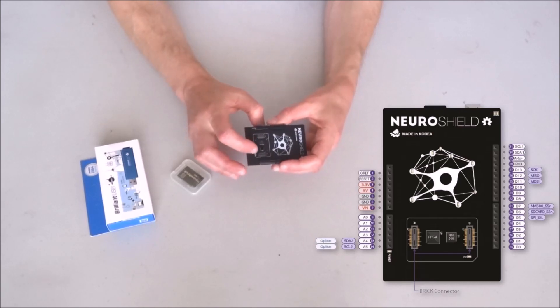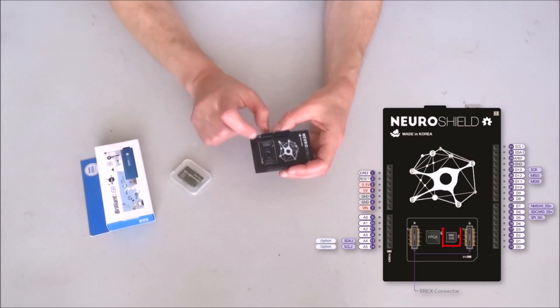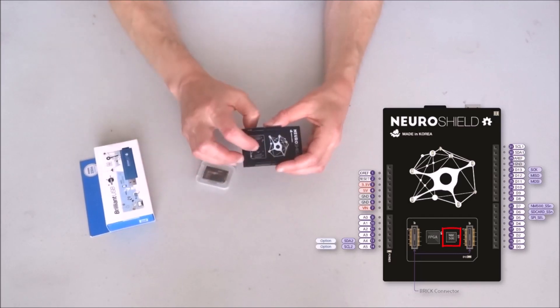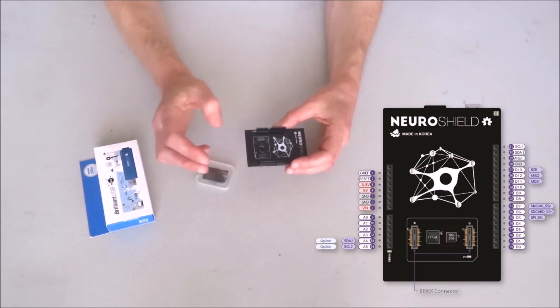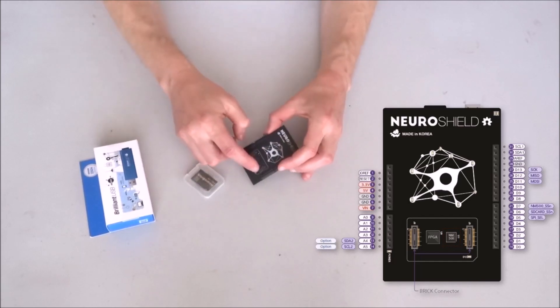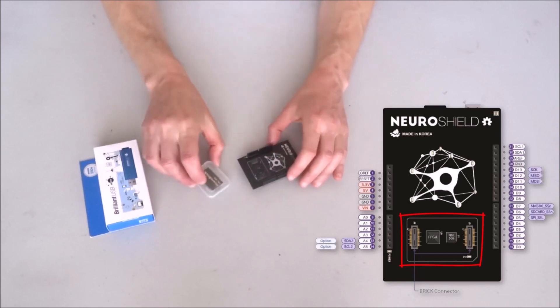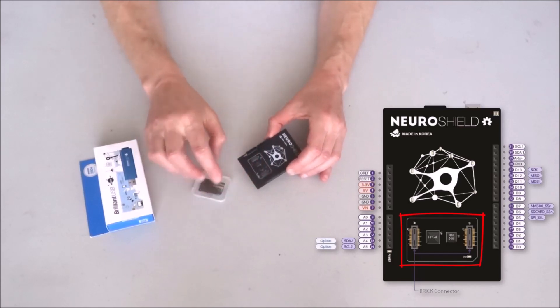But most importantly, it has a specialized neural chip on board. This chip can do nothing other than doing artificial intelligence classifications. And furthermore, right here, you can start stacking neural bricks to add more neurons.